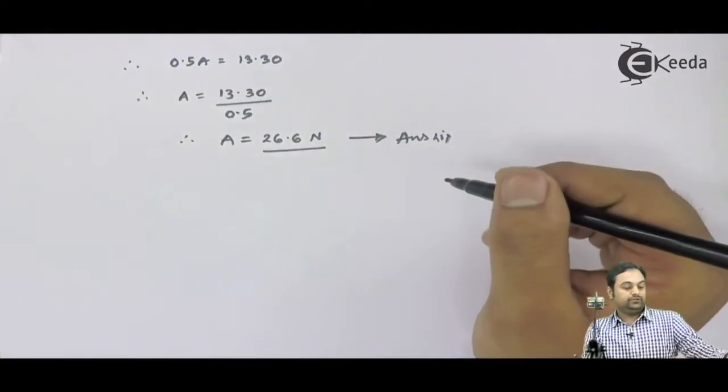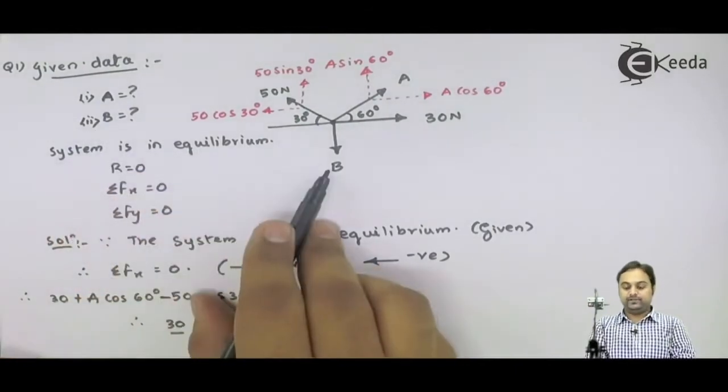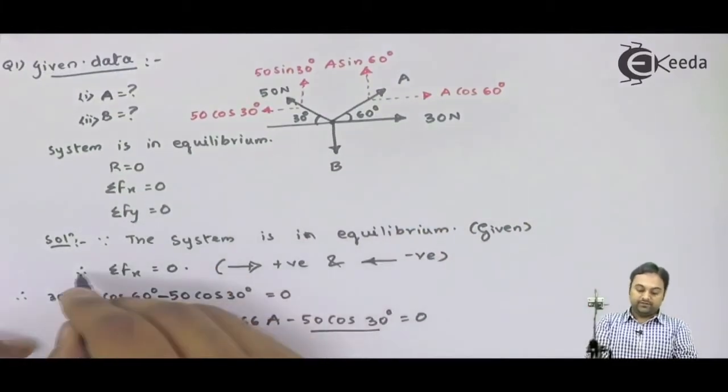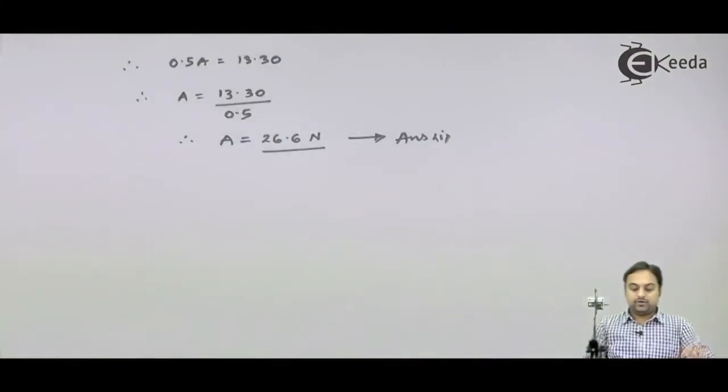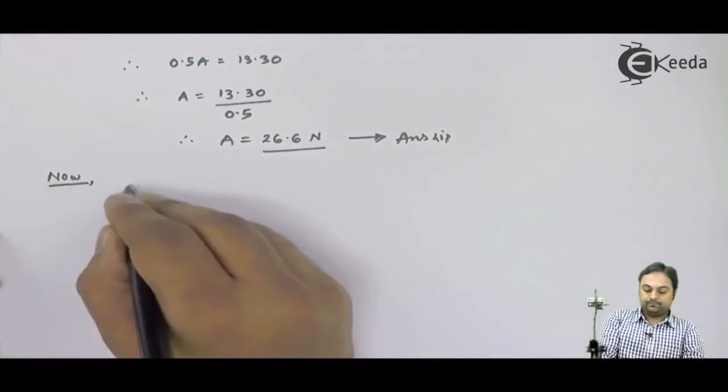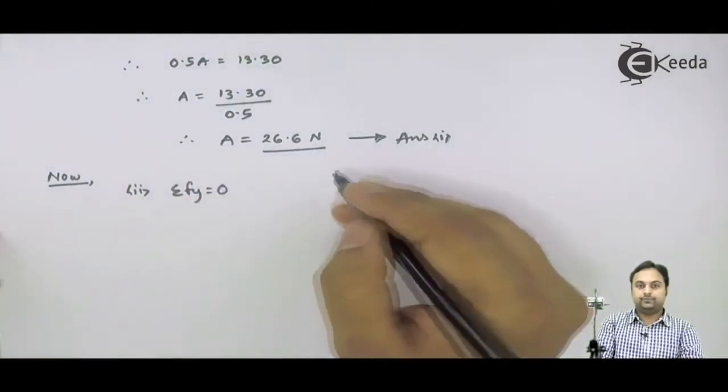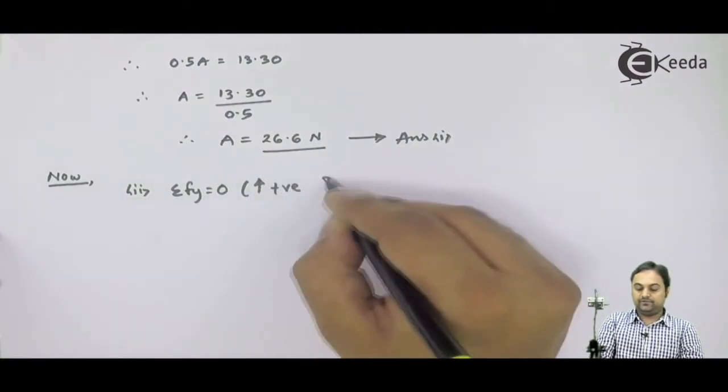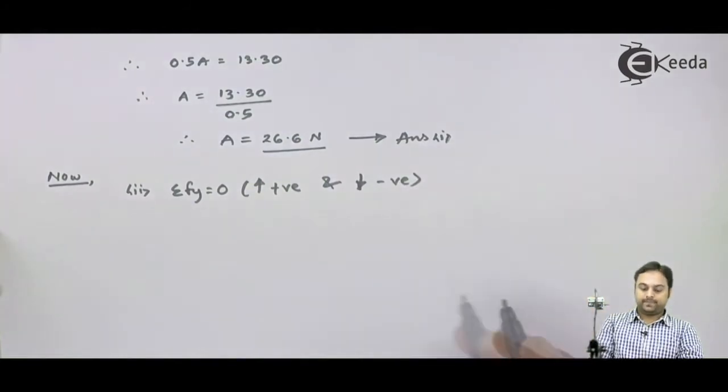Now if I look into the second question, they are telling us to find the value of B, this vertical force. So I will be using the second condition of equilibrium. The first condition was summation Fx is equal to 0. Now I will say that summation of Fy is equal to 0, where all upward forces are to be taken positive, all downward forces are to be taken negative.